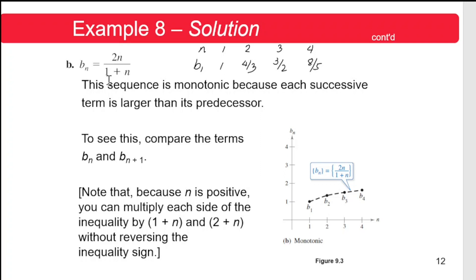For another example, given the n-th term b_n = 2n/(1 + n), to show whether this is monotonic we assign values to n and solve for b_n. If n = 1, then b₁ = 2(1)/(1 + 1) = 2/2 = 1. If n = 2, then b₂ = 2(2)/(1 + 2) = 4/3.